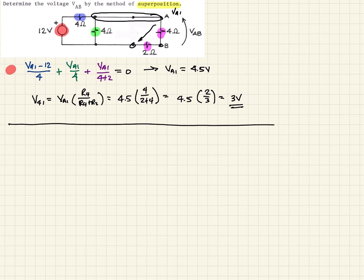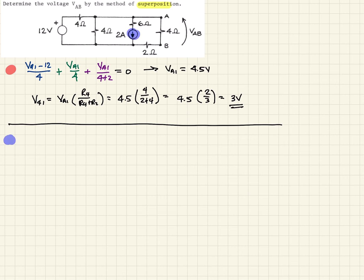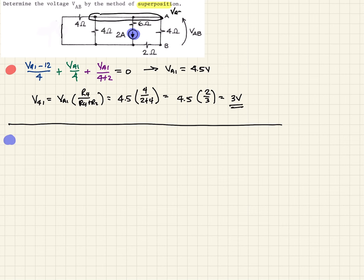Now we need to consider the second source, so we reset our circuit. We're going to consider the current source. Remember, we short voltage sources and open-circuit current sources that we're not considering. In this case, we have a voltage source, so we short it out — just put a line there. Now we see we have a new circuit with a node, which we'll call VA2.